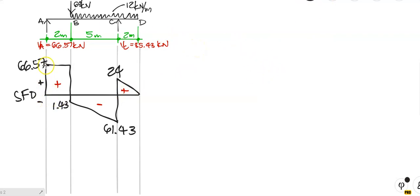Summary: plus 66.57 horizontal across because there's no load. Minus 68 gives minus 1.43. Take away 12 times 5 — 60 — gives minus 61.43. Plus 85.43 gives plus 24. Take away minus 24. Straight inclined line down to zero — it must close. If it doesn't close, you go back to the beginning and start again because you made a mistake somewhere. Don't fudge it.